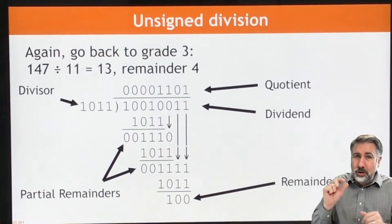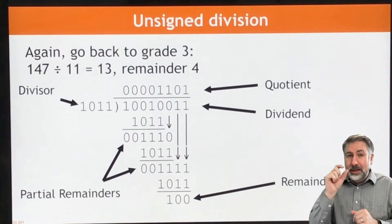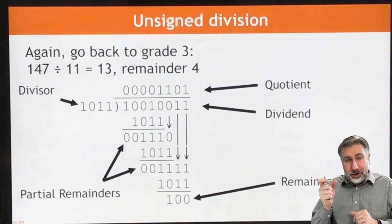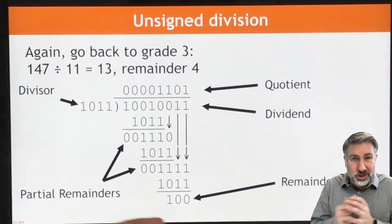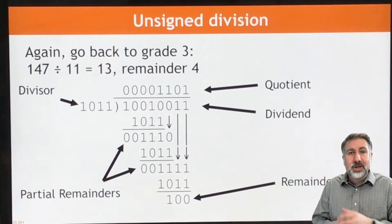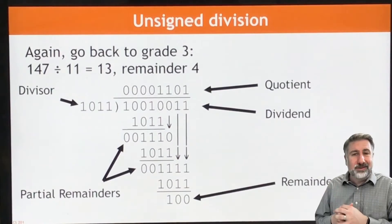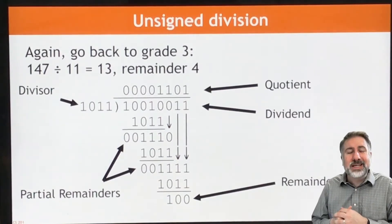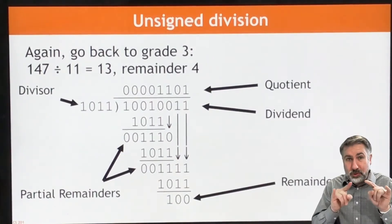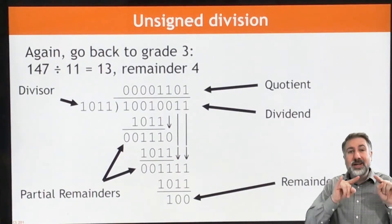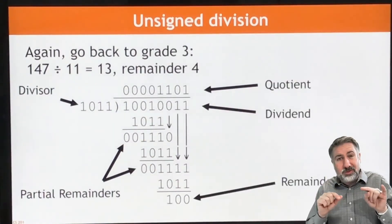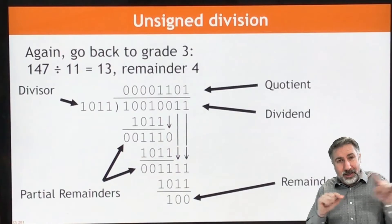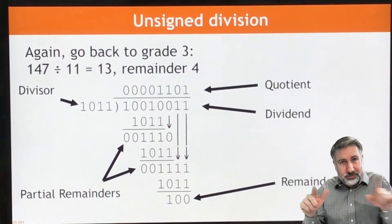With multiplication, we looked at the least significant bit of the multiplier to decide whether to add or not — that was our decision point. With division, we don't have that. We can't make a decision until we've subtracted. So first we're going to subtract, then we're going to look at our result and see if we subtracted too much. And if we did, we're going to add it back and shift again.